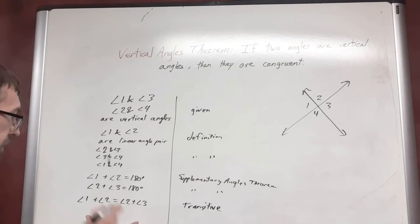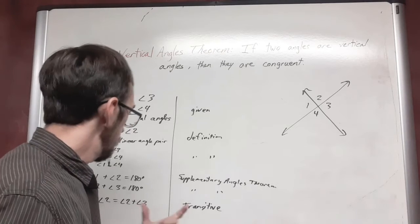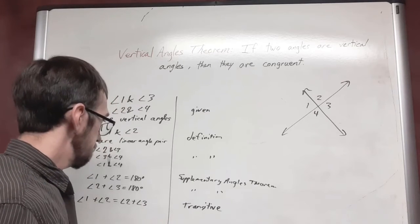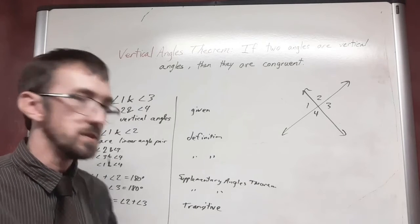And then I can subtract angle two from both sides because I have angle two occurring on both sides. And so we are just going to subtract that out. And that comes to us essentially from the angle addition postulate.